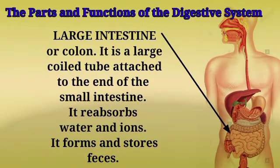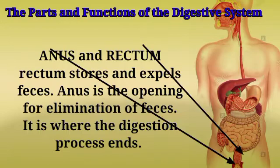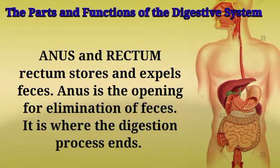The large intestine, or colon, is a large coiled tube attached to the end of the small intestine. It reabsorbs water and ions and forms and stores feces. The rectum stores and expels feces, while the anus is the opening for elimination of feces — this is where the digestion process ends.